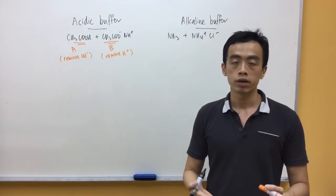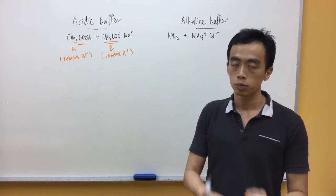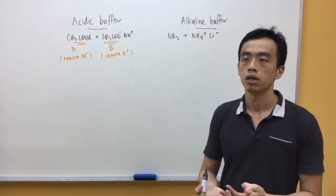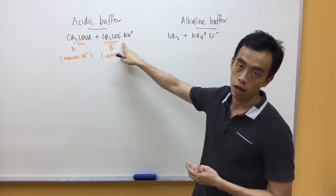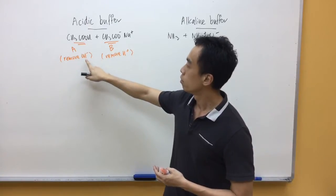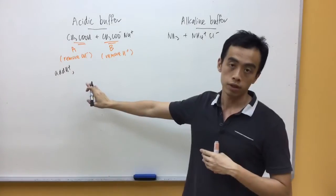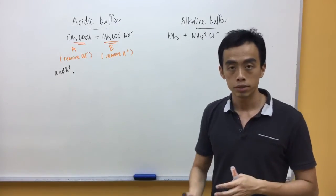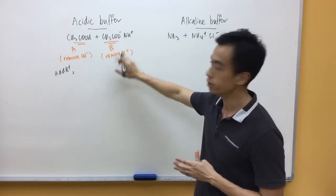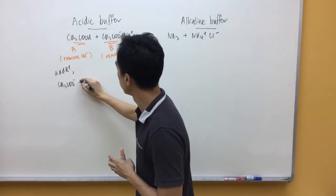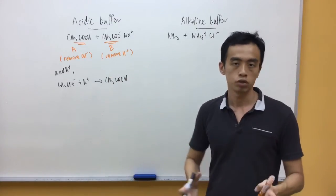So the equations that I'll write down to show how this buffer removes H+ and OH- will just be an acid-base reaction between H+ and CH3CO- and OH- and CH3COH. So when H+ is added, it will be removed by the base. So I'll just write out the acid-base reaction between H+ and CH3CO-. So in this case, I show that H+ is removed, pH is maintained.